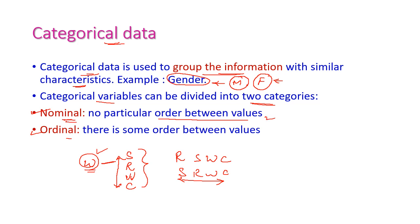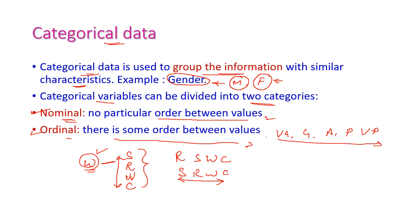The second type is ordinal. Here there is some order between values. For example, the ordering: very good, good, average, poor, very poor. If we take these values, we can arrange them in some order. So there are two kinds of categorical data: the first one is nominal and the second one is ordinal.